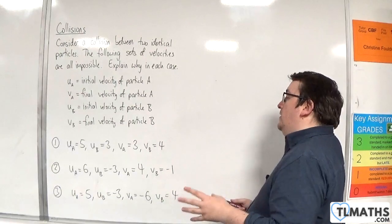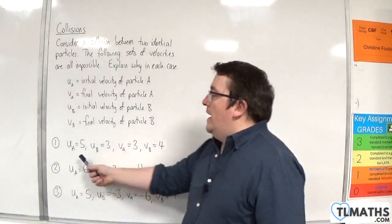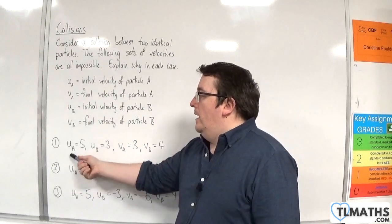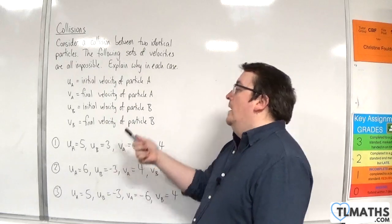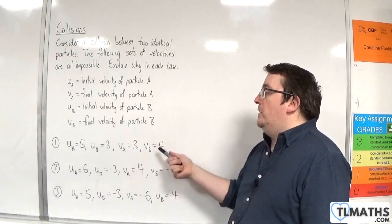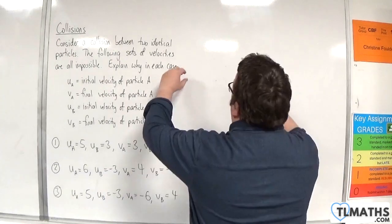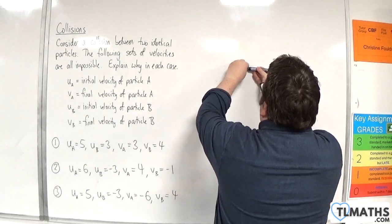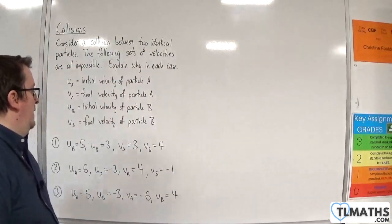From first sight, you might be thinking that kind of makes sense because if A is going to collide with B, A is going faster than B, so it's going to collide with it. A is reducing in speed, B is increasing in speed. Once they knock into one another, A is going to reduce in speed, but B is going to increase. So that feels like it could happen.